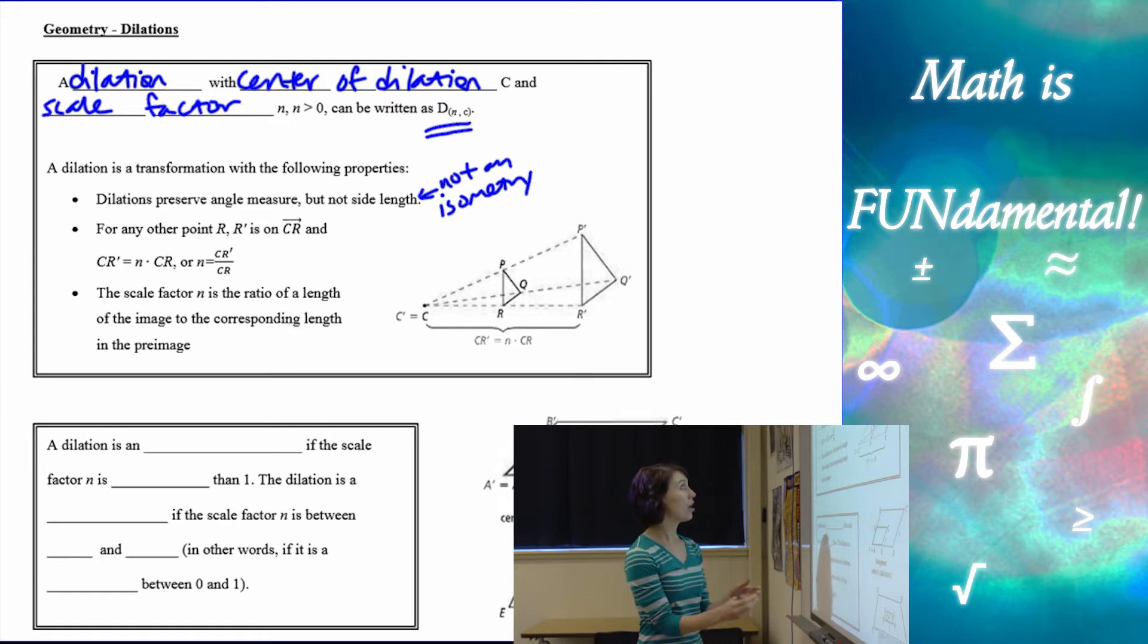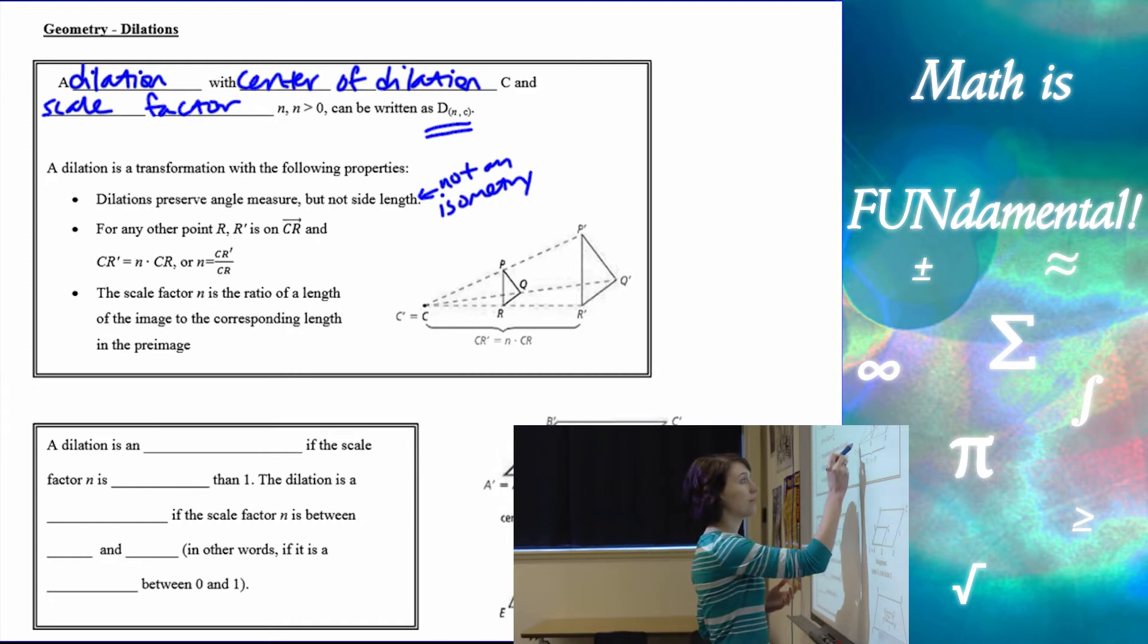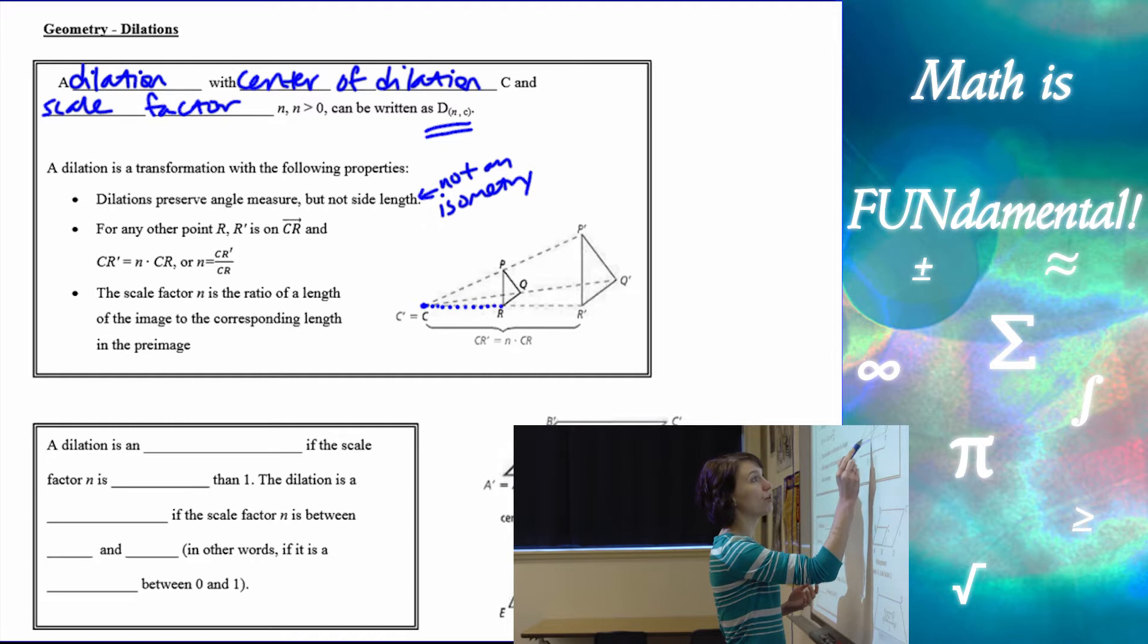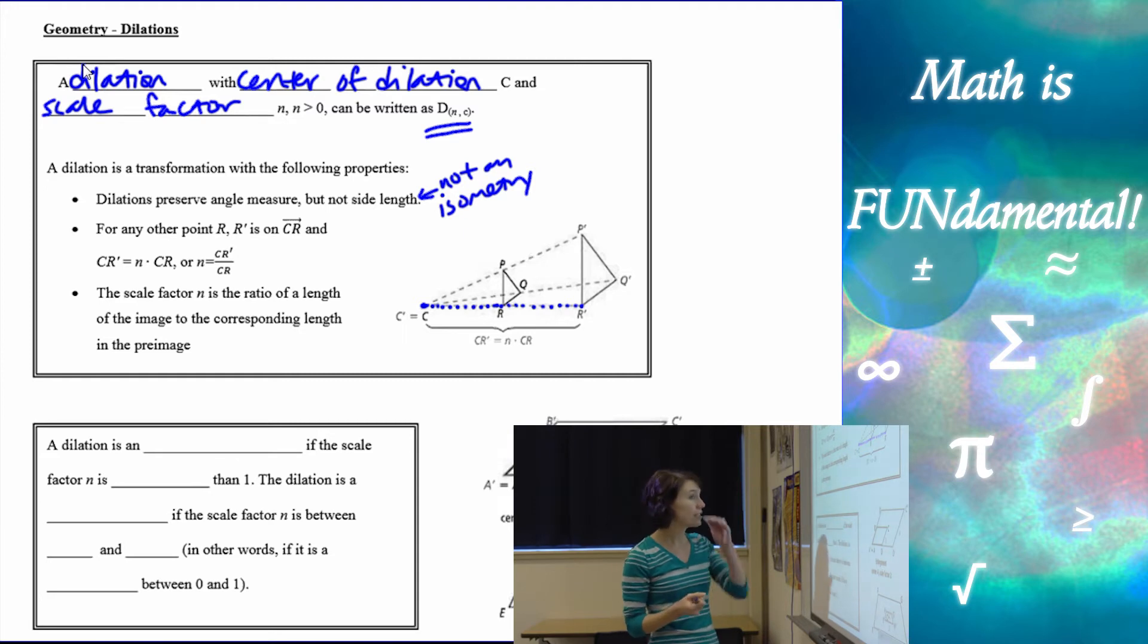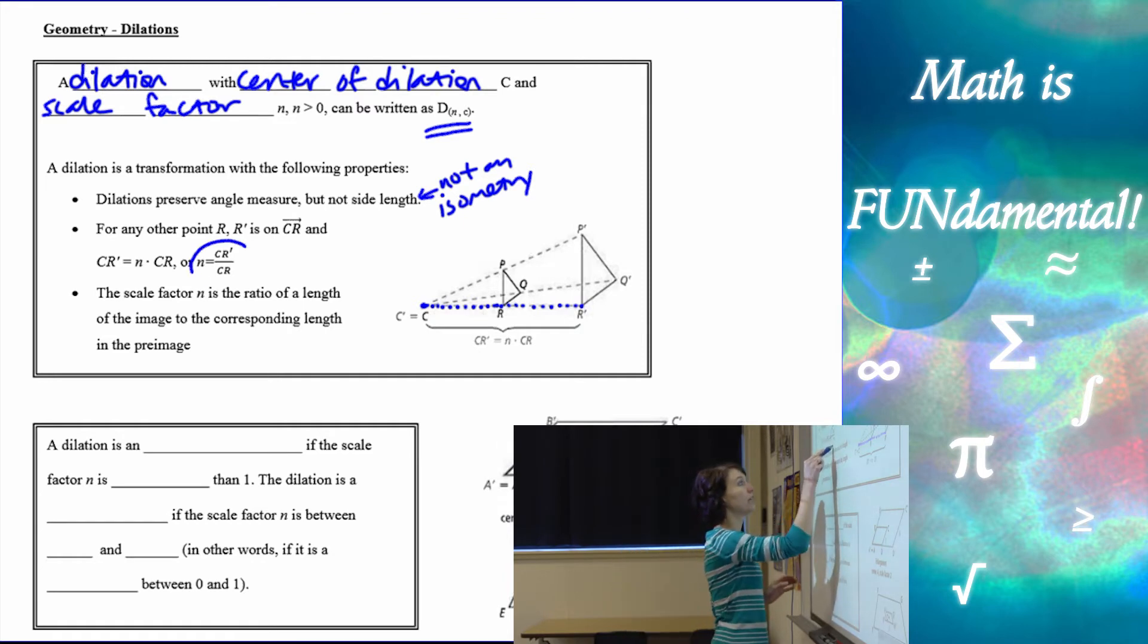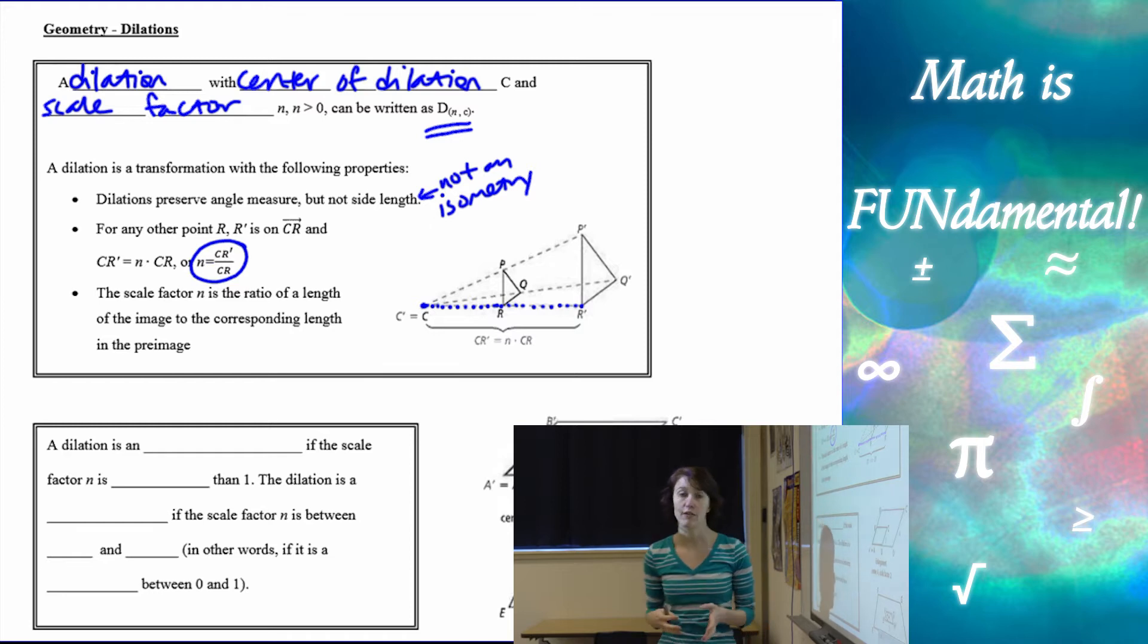For any other point R, R prime is on CR. So all that means is if here's my center of dilation and I draw a line through our pre-image, our image point is going to be on that same line. And N is our scale factor, and it's going to be the ratio of the length of the image to the corresponding length of the pre-image.